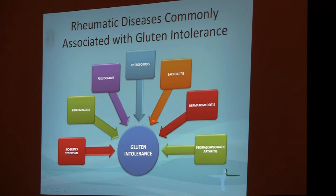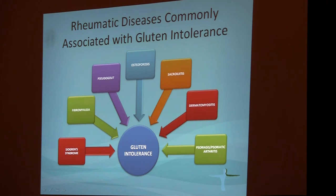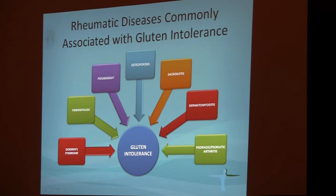Now let's talk about rheumatic diseases. The scope of diseases we see frequently in patients with gluten intolerance includes Sjögren's syndrome, fibromyalgia, pseudogout — a disease of calcium deposition in the joints — osteoporosis, sacroiliitis, which is inflammation of the junction between the pelvic bone and tailbone, dermatomyositis — chronic inflammation of the muscle and skin — as well as psoriasis and psoriatic arthritis. Approximately 30% of patients with gluten intolerance have psoriasis, and the skin condition can be almost completely cured by a gluten-free diet if they carry the appropriate gene.